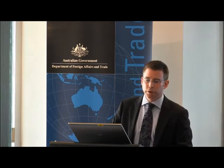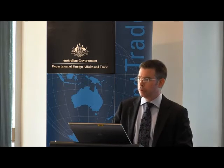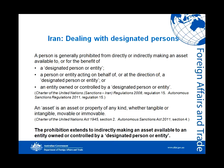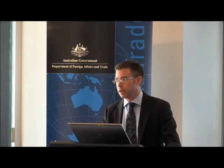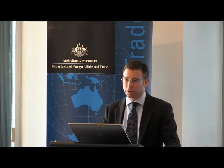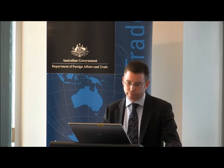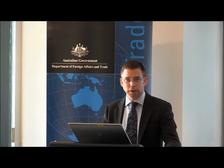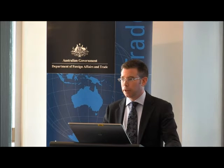Turning to the prohibition on dealing with designated persons and entities — included in both UNSC sanctions and Australian autonomous sanctions. A person is generally prohibited from directly or indirectly making an asset available to or for the benefit of a designated person or entity, a person or entity acting on behalf of or at the direction of a designated person or entity, or an entity owned or controlled by a designated person or entity. Importantly, asset is defined very broadly — it includes any asset or property of any kind, whether tangible, intangible, movable or immovable. The prohibition extends to indirectly making an asset available to an entity merely owned or controlled by a designated person or entity.